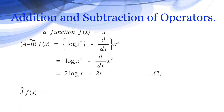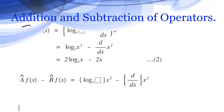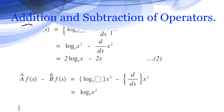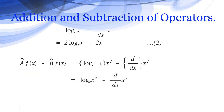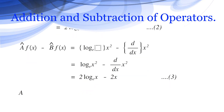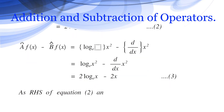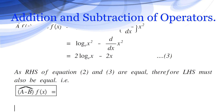For Âf(x) − B̂f(x) = log_e(x²) − d/dx(x²) = 2·log_e(x) − 2x. This is equation 3. As the right-hand sides of equations 2 and 3 are equal, therefore the left-hand side must also be equal, that is (Â − B̂)f(x) = Âf(x) − B̂f(x).